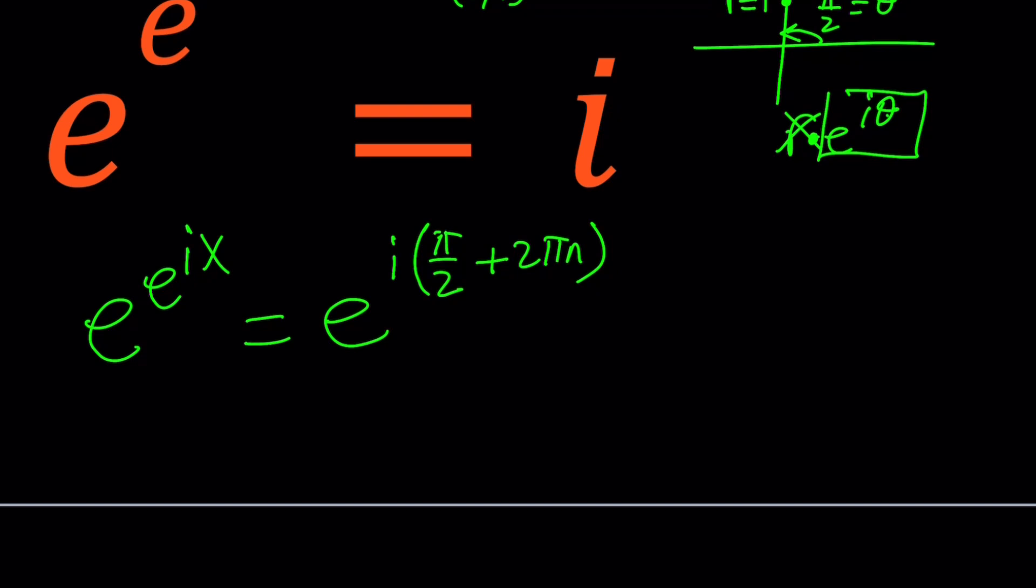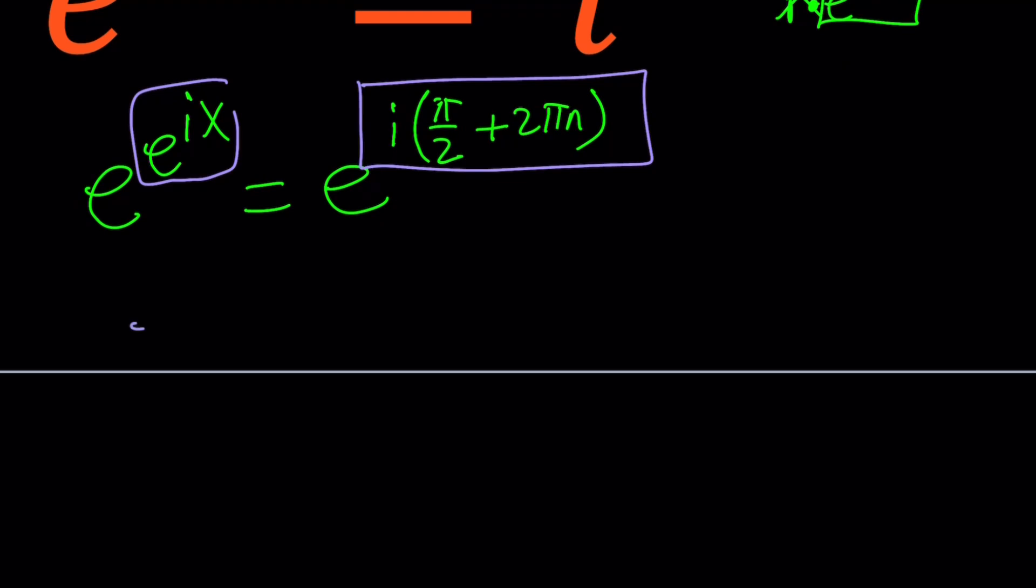Now, we have the same bases. So we can ln both sides and now we're going to end up with the same exponents. So these are going to be the exponents. So they're equal, right? Let's go ahead and write it down. E to the power of ix equals i times π over 2 plus 2πn. Awesome.